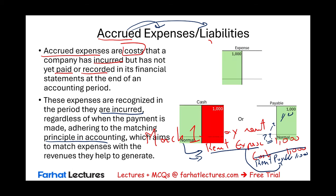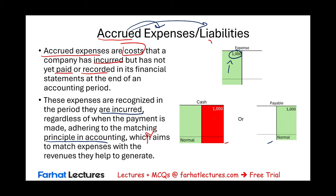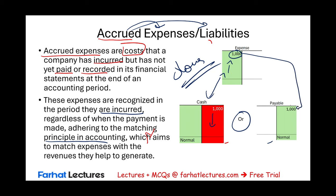Let me show you another picture. Let's assume you have $1,000 of expenses — you are going to debit expenses $1,000. Most of the time we debit an expense and we credit cash. What happens if you don't have the money to pay it? You're going to have to credit a payable. If you debited rent expense, you credit rent payable. If you debited tax expense, you credit tax payable. If you don't pay the expense, the expense becomes a payable.